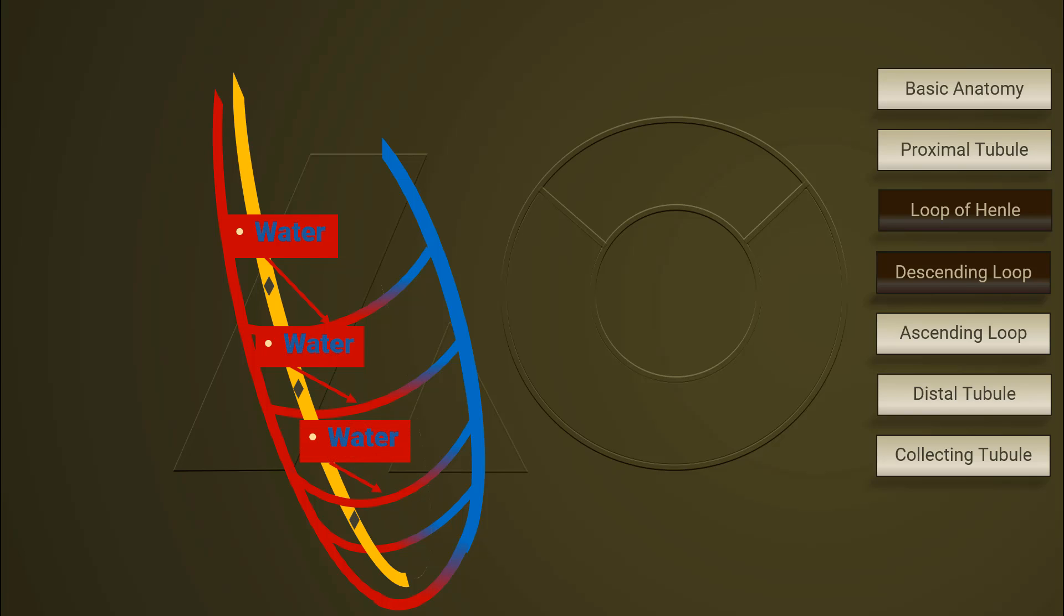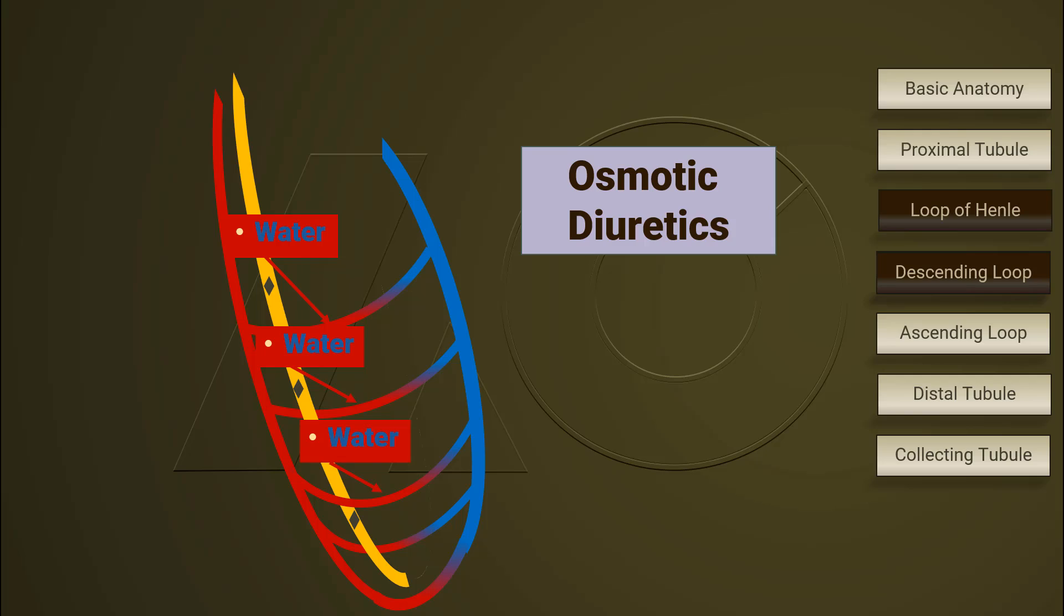Which means that the osmolarity of the luminal filtrate increases. The osmotic diuretics take effect here on the hypertonic filtrate in the descending lumen.